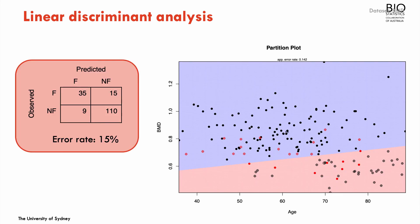We can construct the confusion matrix, which in this case gives an error rate of 15% — 16 cases out of 169 are misclassified. The model predicted no fracture for 15 individuals who actually had fractures, and predicted fracture for 9 individuals who had no fracture. This error rate is identical to what we obtained with logistic regression.